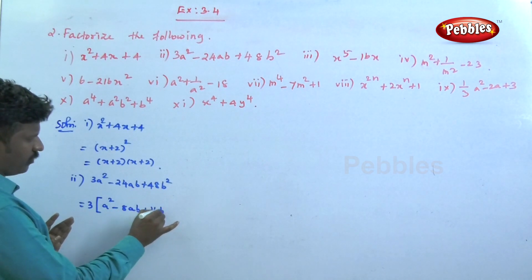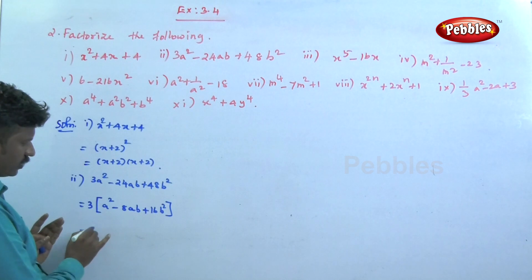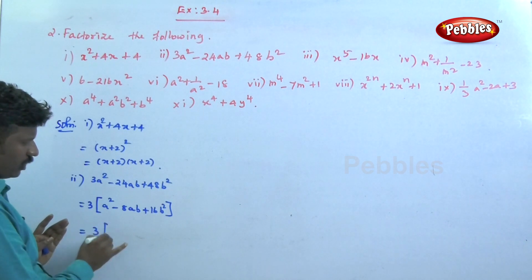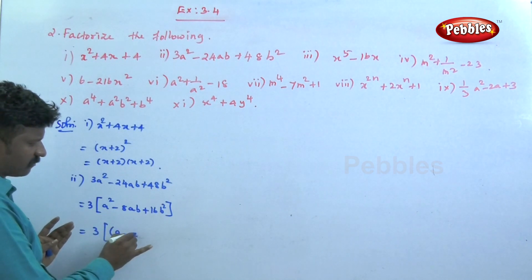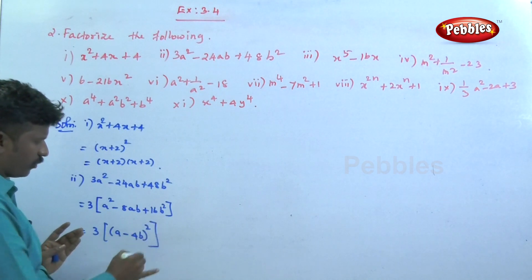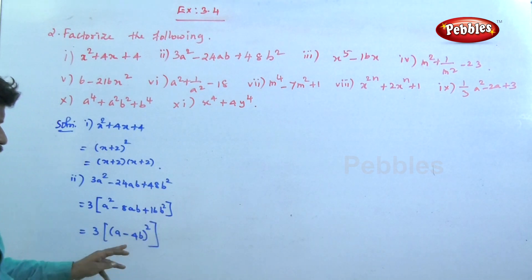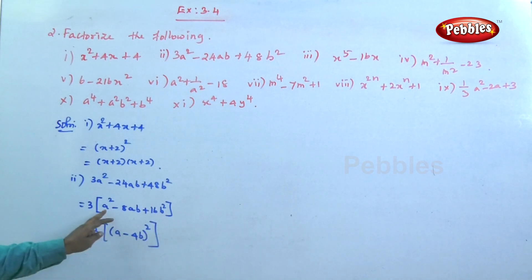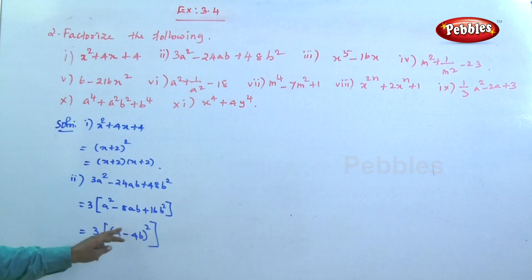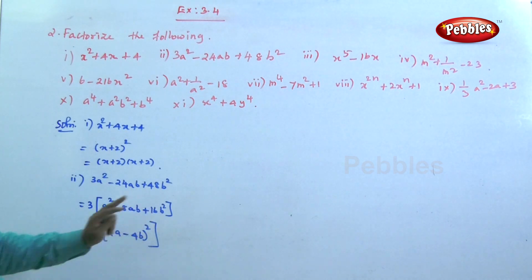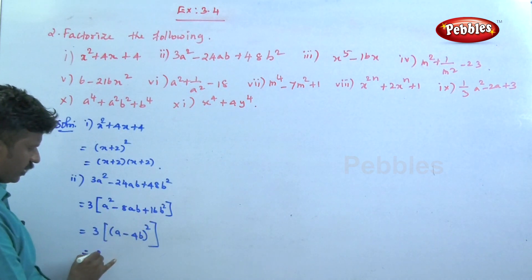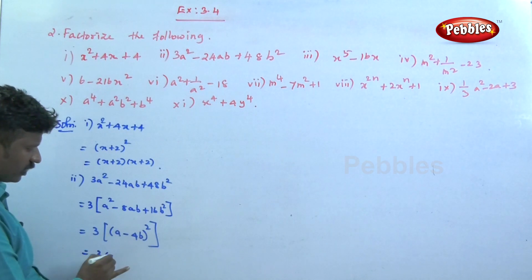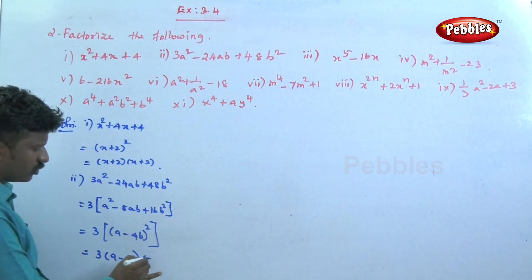So we get 3 into a minus 4b the whole square, using the identity a squared minus 2ab plus b squared equals a minus b whole square. So the answer is 3 into a minus 4b into a minus 4b. These are the factors.